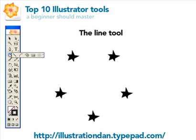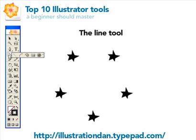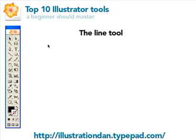That pretty much sums up the line tool set — one of the easiest sets of options in the whole toolbar. I mainly use the line tool day-to-day, and the polar grid tool has come in handy a couple of times. I draw most shapes with the pen tool, but it's definitely worth becoming familiar with these options. Our next tutorial will be over the rectangle tool.